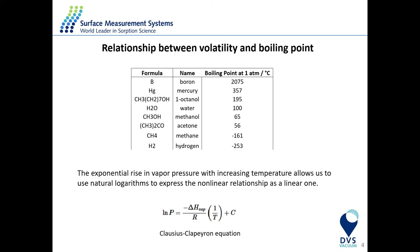Another important parameter is the relationship between volatility and boiling point. Volatility describes in general how easily a substance evaporates. Looking at a table of different compounds ranging from boron to hydrogen, we can see that as the boiling point goes down, the volatility goes up. Hydrogen is highly volatile compared to mercury, which is the least volatile. One use of mercury was in manometers because the vapor pressure of mercury is about 0.0017 torr at 25 degrees Celsius.